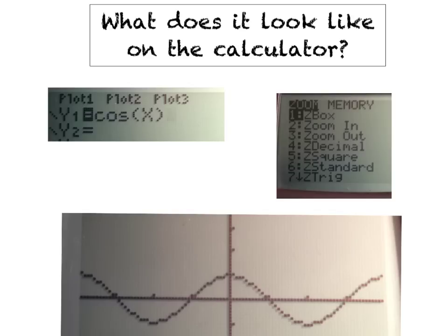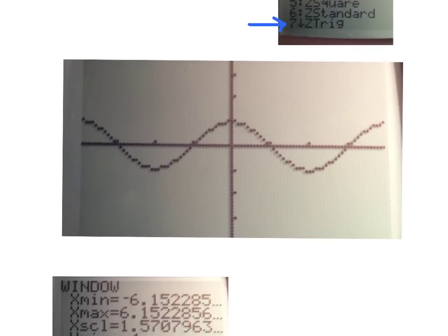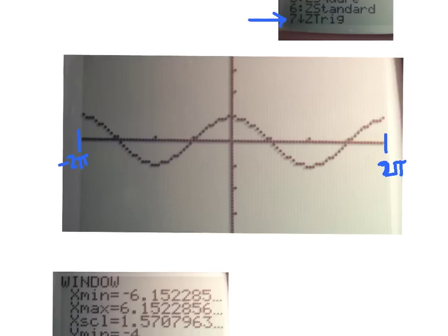We're going to introduce the calculator again. Get it out. Go to Y equals and type in the cosine of x. Then hit the zoom button and select number 7, zoom trig — which we introduced yesterday. The good thing about zoom trig is it automatically corrects your view regardless of whether you're in degree or radian mode. I suggest radian mode for the rest of our discussion. Once you hit zoom trig, the left edge is negative 2 pi and the right edge is positive 2 pi. You'll see two complete cycles.